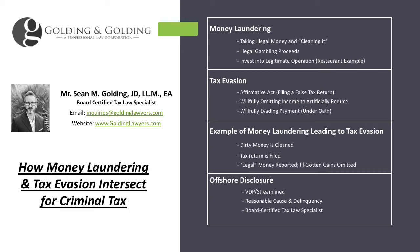So instead of going that route, a person might say, 'Okay, I see this restaurant is looking for an investor. I'm going to take my million dollars of ill-gotten gains — that's what they call it — and invest it into this restaurant for a 25% stake.' Then after a couple of months, they get their 25% share of dividends or proceeds, and now they think they have clean money.